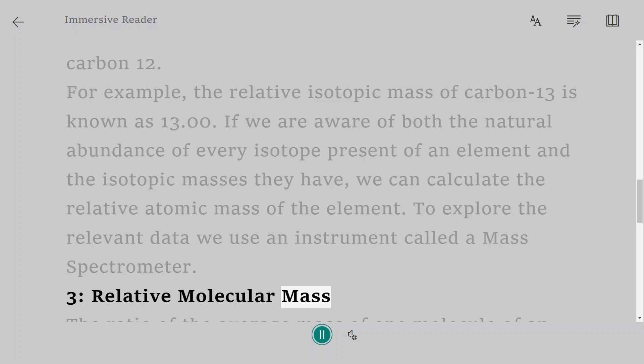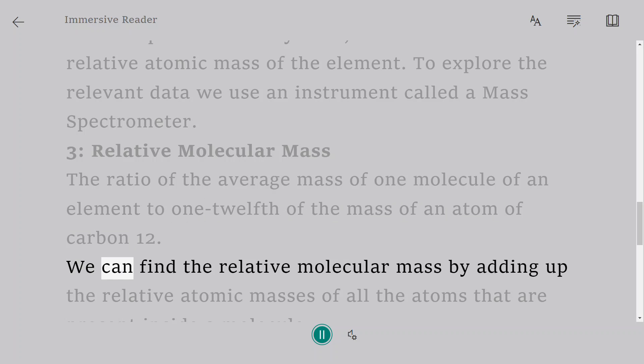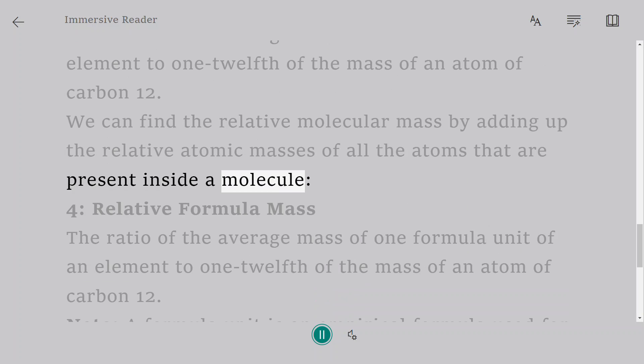Relative Molecular Mass: The ratio of the average mass of one molecule of an element to one-twelfth of the mass of an atom of carbon-12. We can find the relative molecular mass by adding up the relative atomic masses of all the atoms that are present inside a molecule.